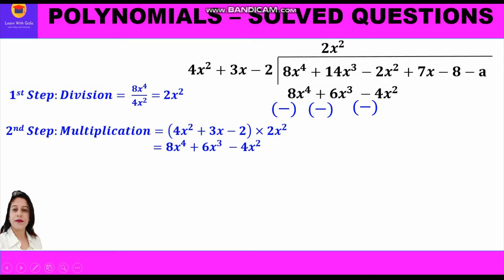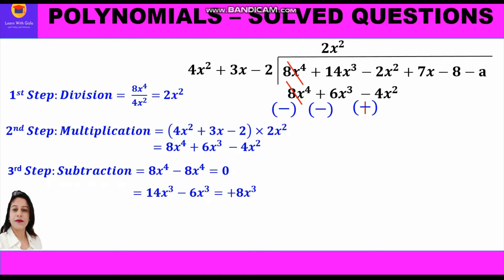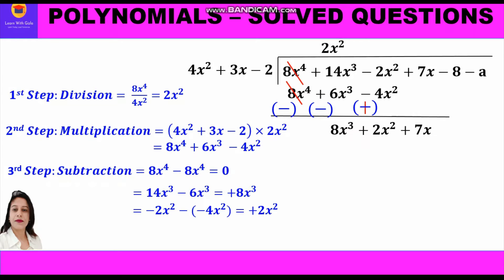Now the next step is subtraction. First we change the signs — plus becomes minus and minus becomes plus. Then 8x⁴ cancels with 8x⁴ giving 0. 14x³ minus 6x³ gives 8x³, and minus 2x² plus 4x² gives 2x². So we have 8x³ plus 2x² as a remainder, and we bring down 7x.